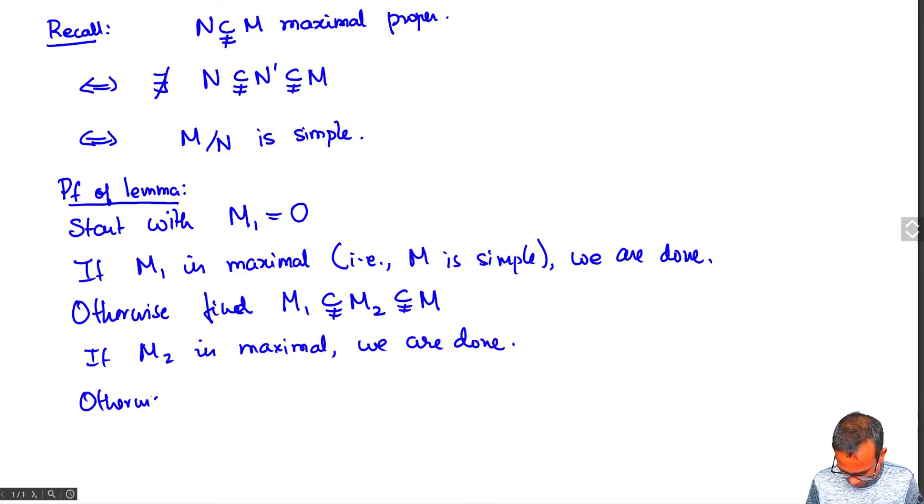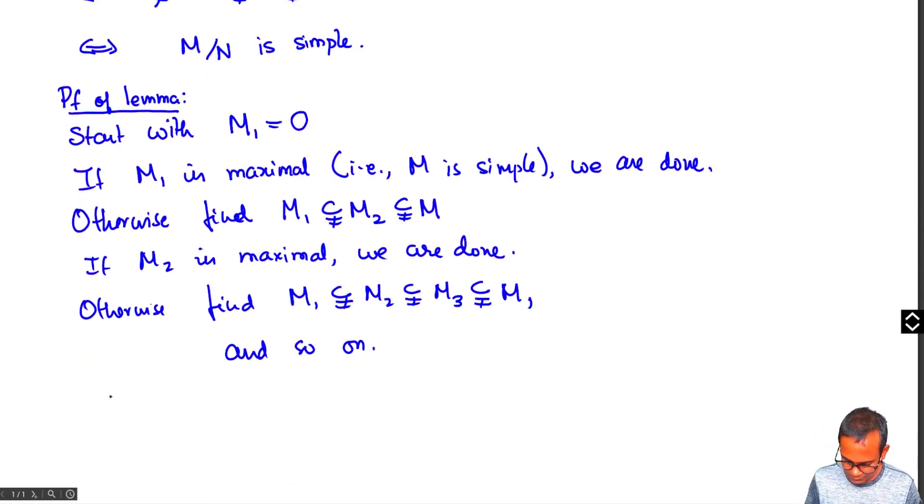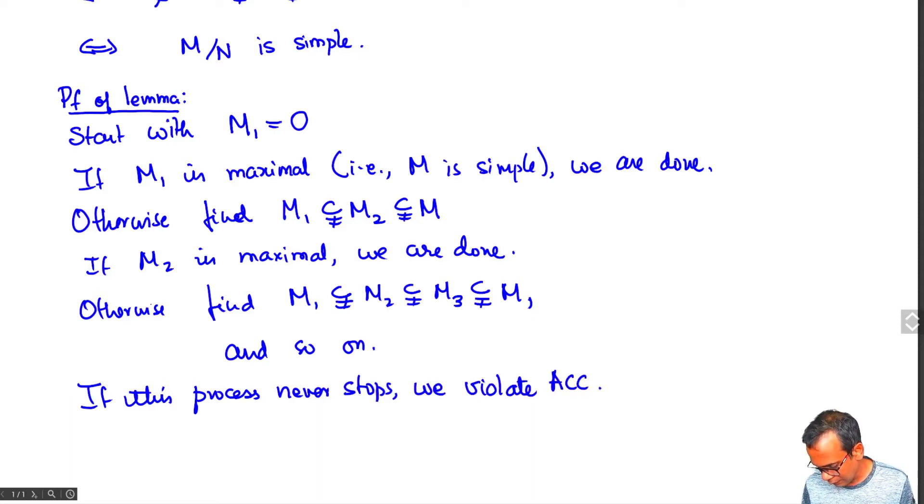Otherwise, we can find M1 strictly contained in M3, strictly contained in M, and so on. This process, if it never stops, we will have a contradiction to the ascending chain condition. And so it must stop after finitely many stages, producing a maximal submodule.